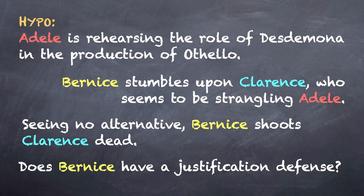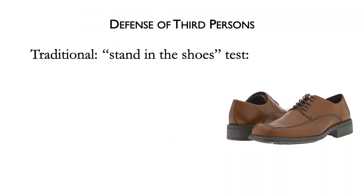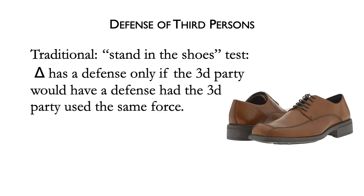But the law is less forgiving if Bernice makes a mistake when defending someone else. Traditional doctrine imposes a stand-in-the-shoes test: the defendant has a defense only if the third party was privileged to use the same force the defendant used. In our hypothetical, the measure of Bernice's privilege is Adele's privilege. Had Adele shot Clarence, she would have no defense of self-defense — she knew Clarence was simply playing a part in a play. Therefore, Bernice could not raise a defense of self-defense.